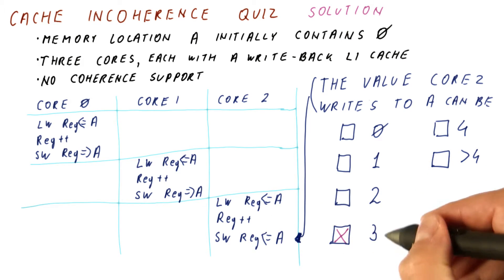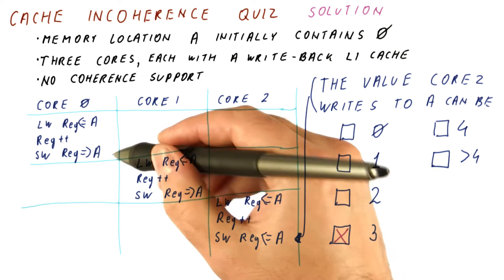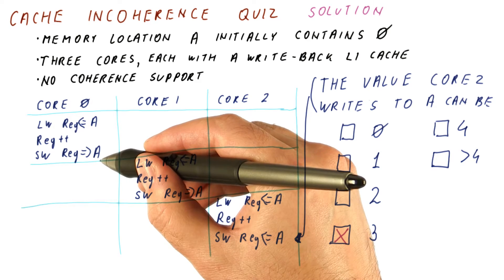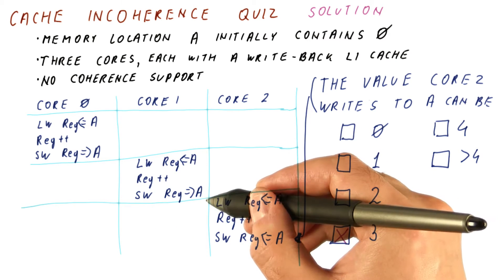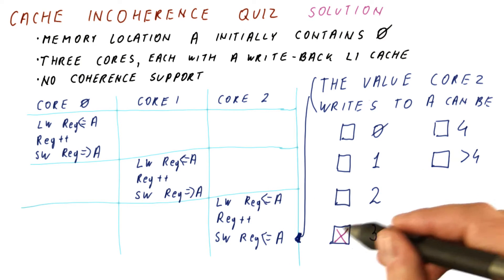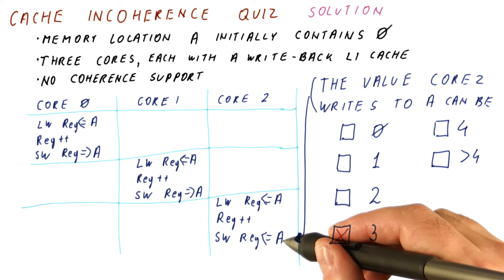So this 3 here is a possible answer. If core 0 here happens to replace this block that contains a from its cache before core 1 tries to read it, and then core 1 replaces before core 2 reads it, and so on, in that case we get actually a 3 here, which is the correct answer.